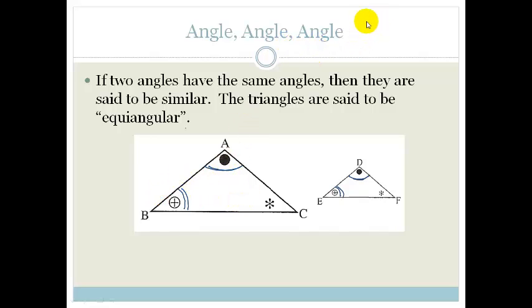And the rule would be angle, angle, angle. So if the three angles or just two of them, which means that obviously then the third will be, if the three angles in two triangles are equal, then we say that they are similar and we say that they are equiangular.